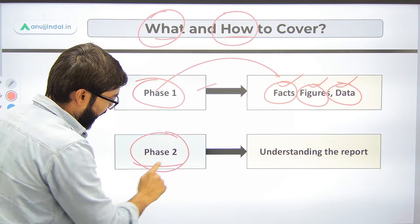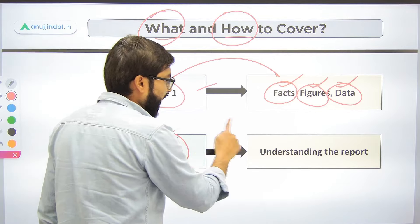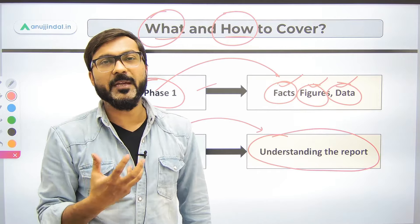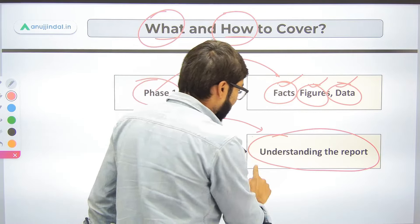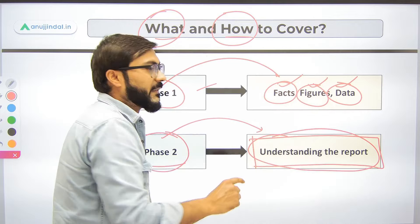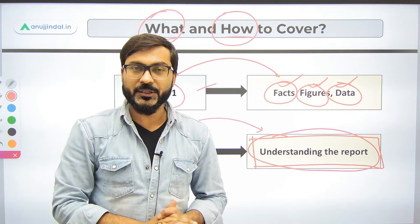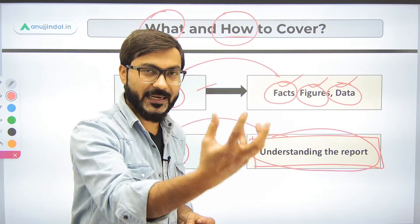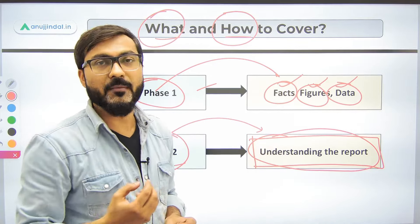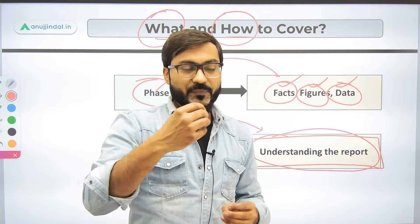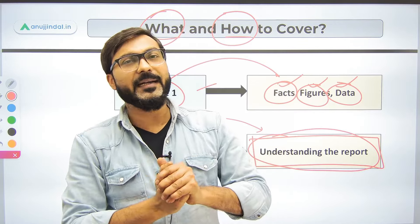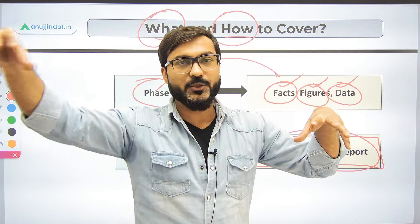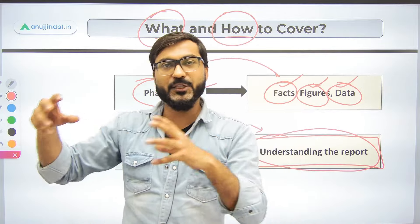For Phase 2, you need to understand the report. Whenever any organization releases a report, they always provide a trend. For example, if there is a report on migration, that report must include a trend — such as: in 2023 the migration was so-and-so, and in 2024 the migration will be so-and-so.